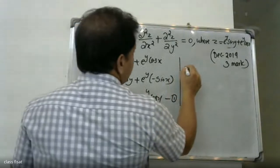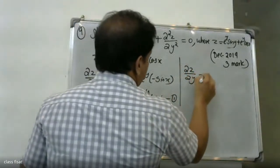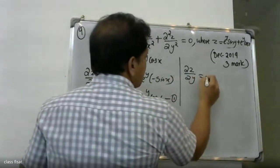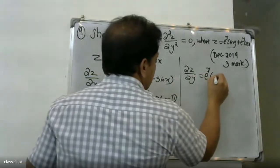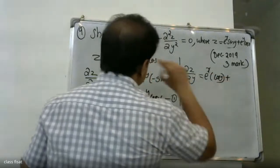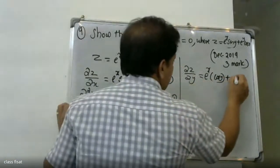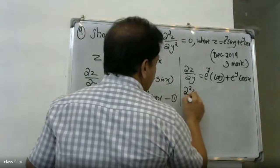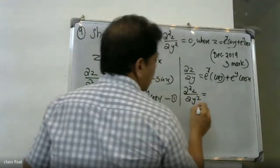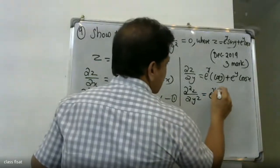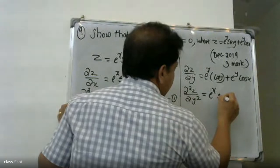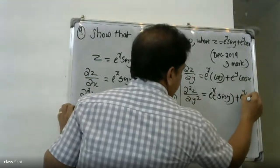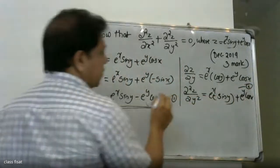Now partial differentiate with respect to y: e raised to x sin y — here x is constant, sin y differentiate gives cos y, giving e raised to x cos y. Plus e raised to y cos x differentiate gives e raised to y cos x. So dou square z by dou y square equals minus e raised to x sin y plus e raised to y cos x. This is equation two.